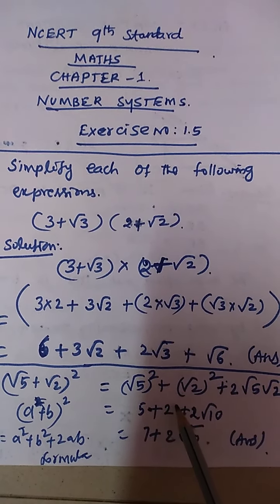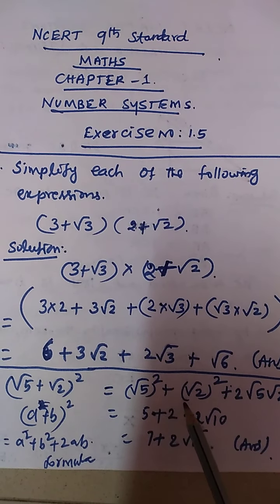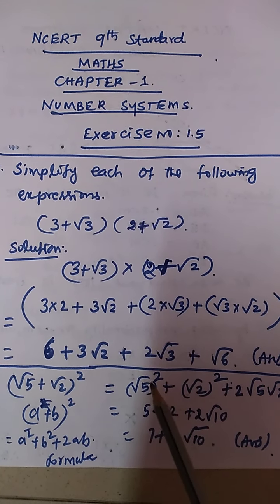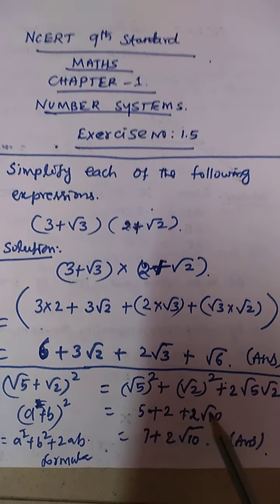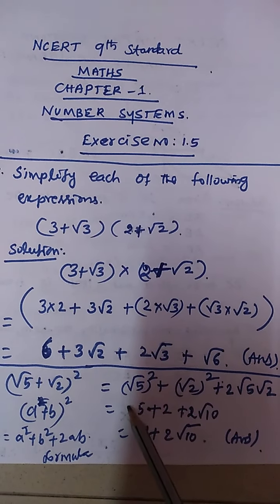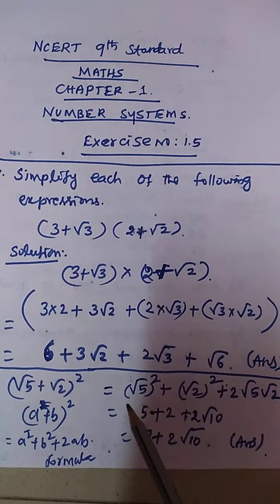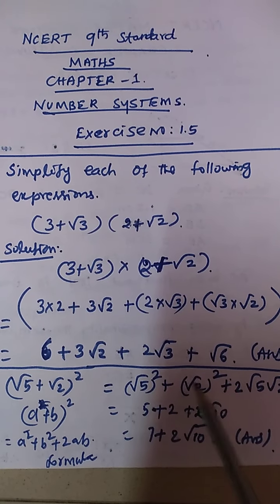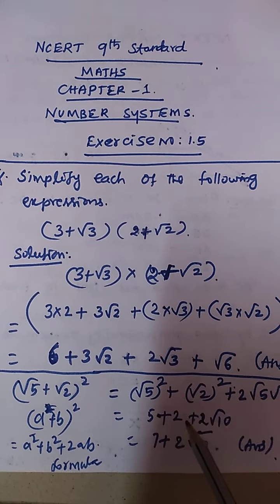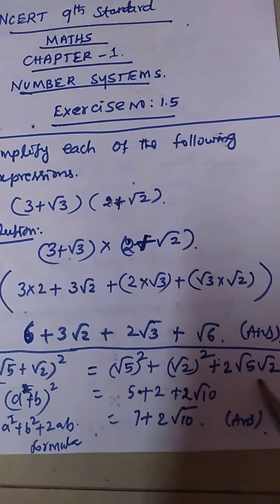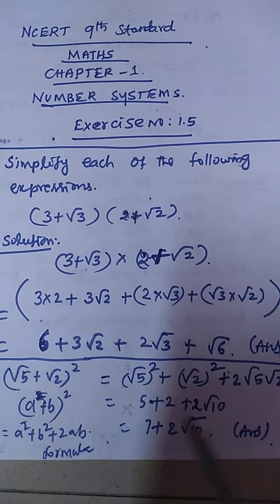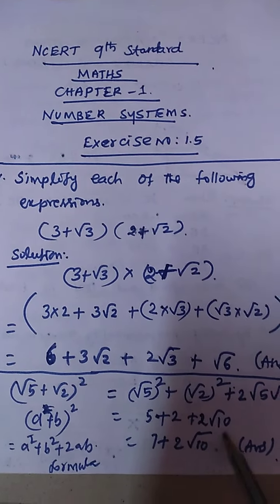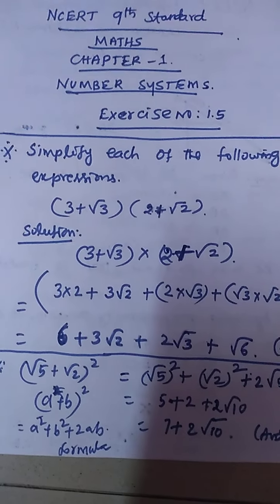Anything squared — root 2, root 5 — when squared, the root is cancelled and we get the number itself. Root 5 × root 5 = 5, root 3 × root 3 = 3, root 2 × root 2 = 2. So (√5)² = 5, (√2)² = 2, and 2 × √5 × √2 = 2√10. Therefore, 5 + 2 + 2√10 = 7 + 2√10 is the answer.